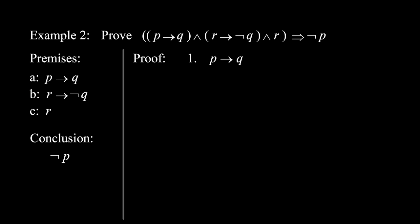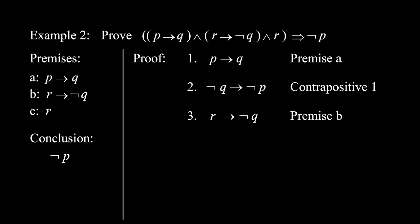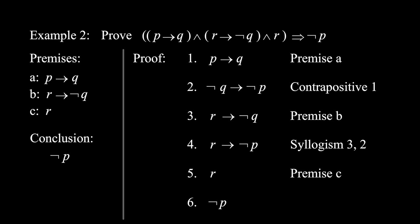Step 1: (p implies q) — premise A. Step 2: (not q implies not p) — contrapositive of 1. Step 3: (r implies not q) — premise B. Step 4: (r implies not p) — syllogism applied to 3 and 2 (notice the order: 3 first, then 2). Step 5: R — premise C. Therefore, Step 6: not p — by applying modus ponens to 4 and 5. We are done.